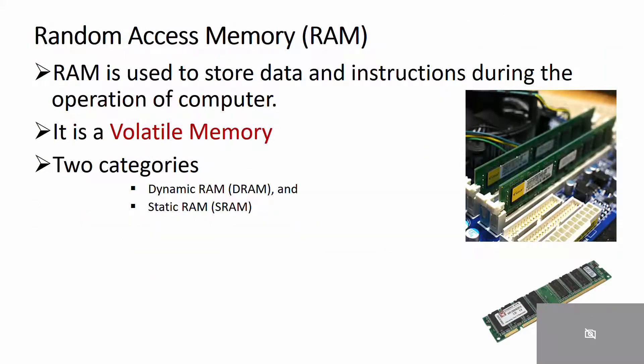Random Access Memory: RAM is used to store data and instructions during the operation of the computer. The data and instructions that need to be operated upon by the CPU are first brought into RAM from secondary storage devices like hard disks. CPU interacts with RAM to get the data and instructions for processing. It stores temporary data of currently running applications and plays a vital role in computer operation.